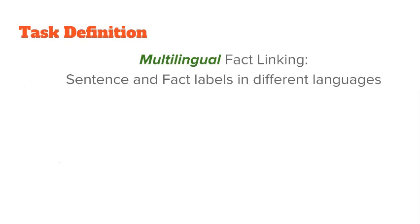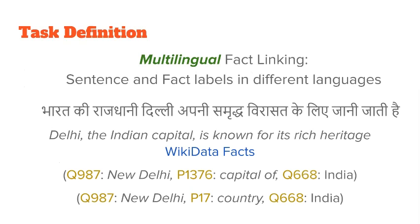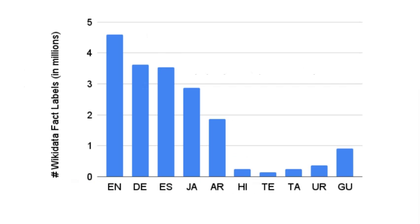We extend this to the multilingual setting where sentence and fact labels can be in different languages. For example, the sentence can be in Hindi and the fact labels can be present in English. This is an important setting because most of the fact labels are biased towards high-resource languages such as English and German, and are sparsely present in low-resource languages such as Hindi, Telugu, and other Indian languages.